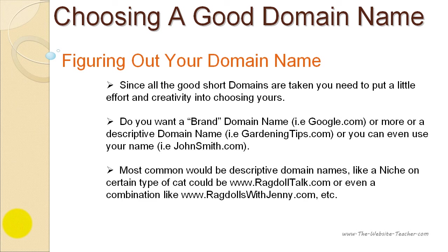The most popular method for choosing a domain name for blogs is the descriptive domain name. For example, if you want a domain name about ragdoll cats, you could use something like ragdolltalk.com. Or if that's taken, you could mix in your own name — for example, ragdollswithjenny.com if your name was Jenny. You can see there's a good keyword in there, which is 'ragdolls,' and by adding 'with Jenny' it also tells people what your name is. So if you can't find an available descriptive name, you can always add in your own name.